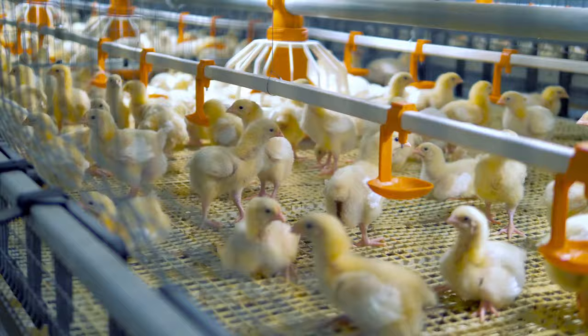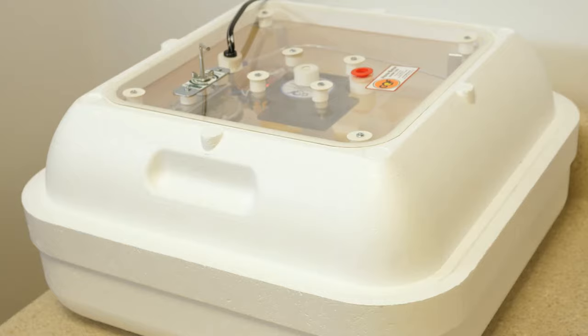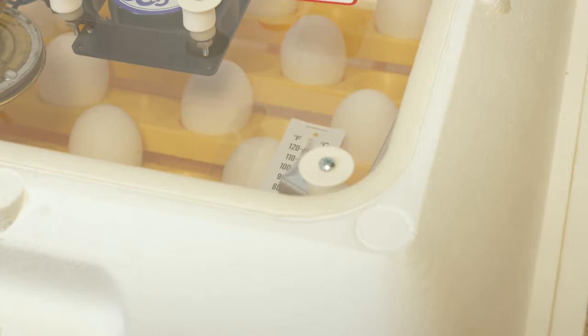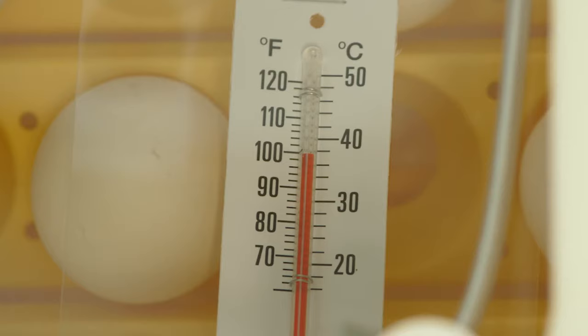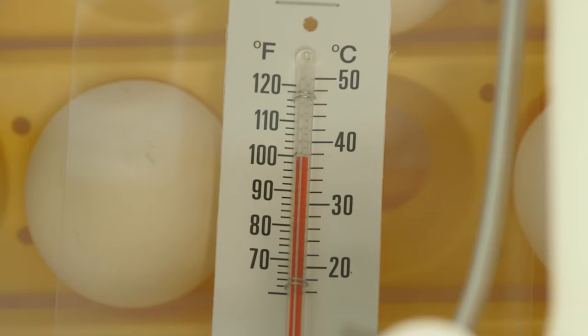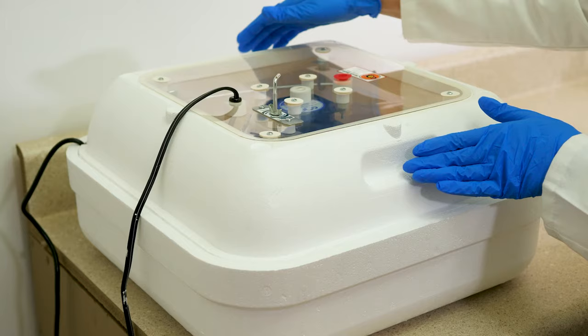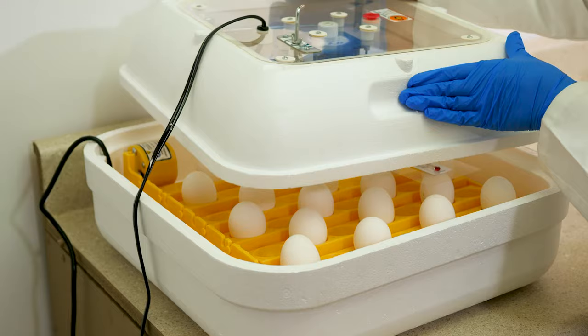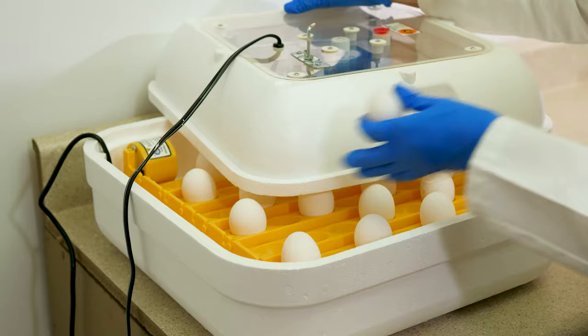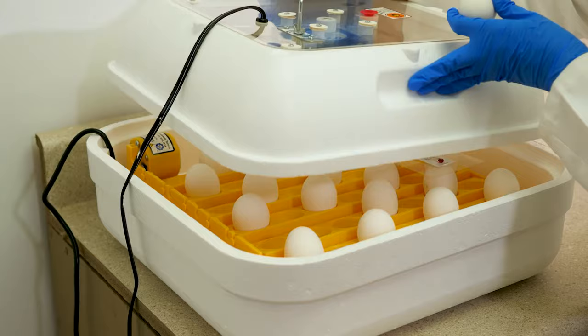We are going to look at the embryo at several stages in its development. In order to facilitate the development of the chicken embryo, we have used an incubator to keep the eggs at a constant 100 degrees Fahrenheit or 37.8 degrees Celsius. Now that the eggs have been incubating for 24 hours, let's examine one to see the developing embryo.